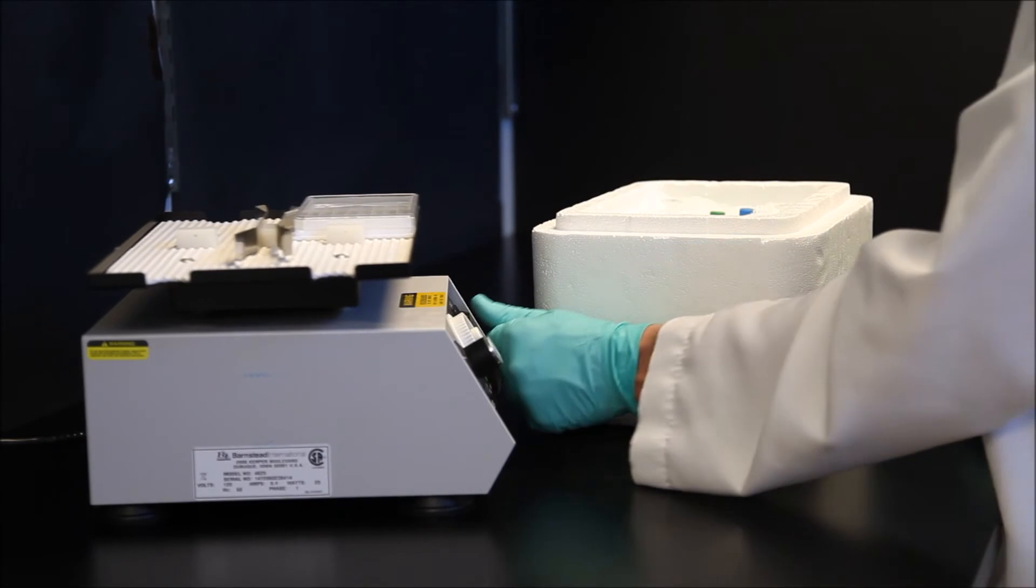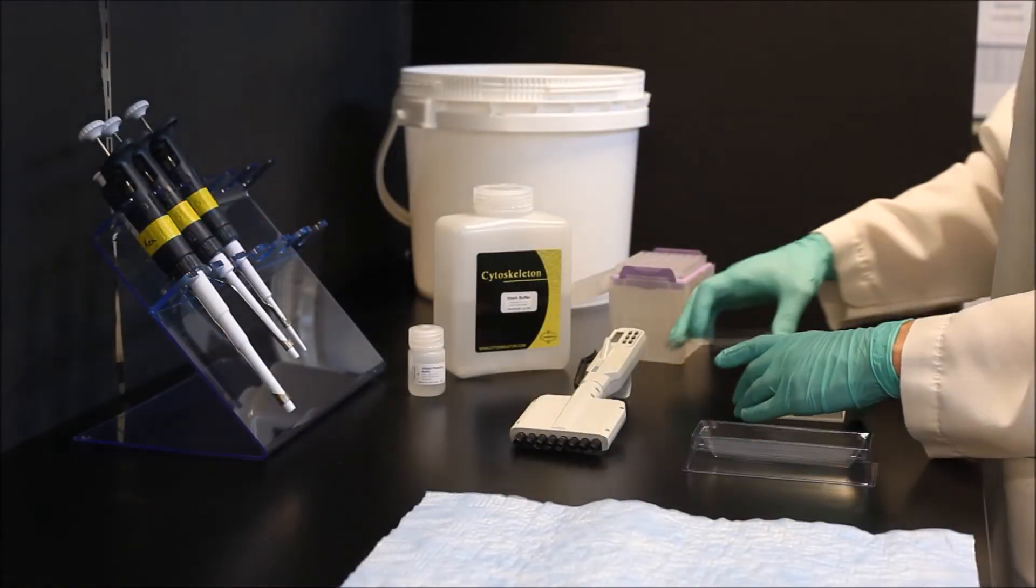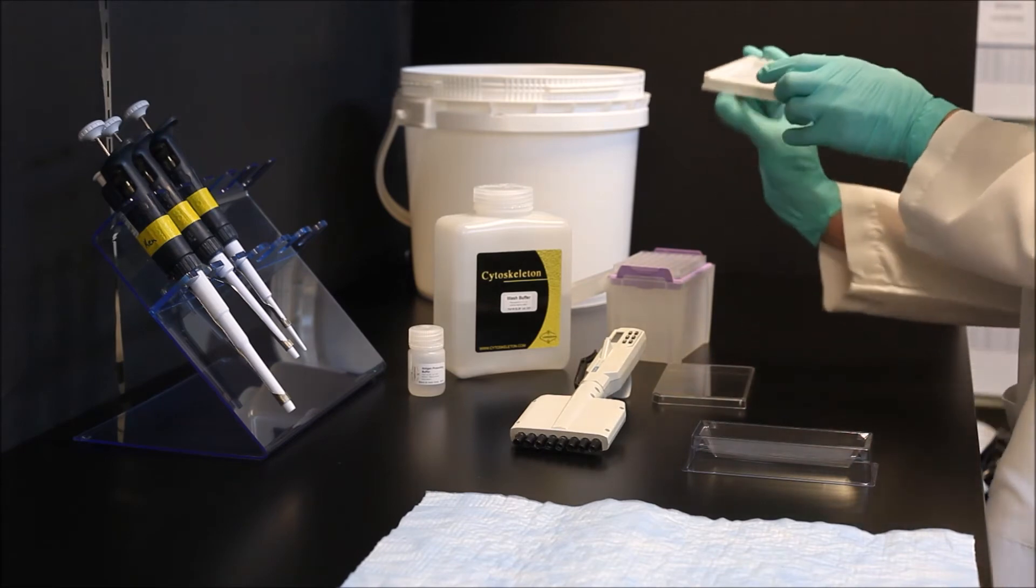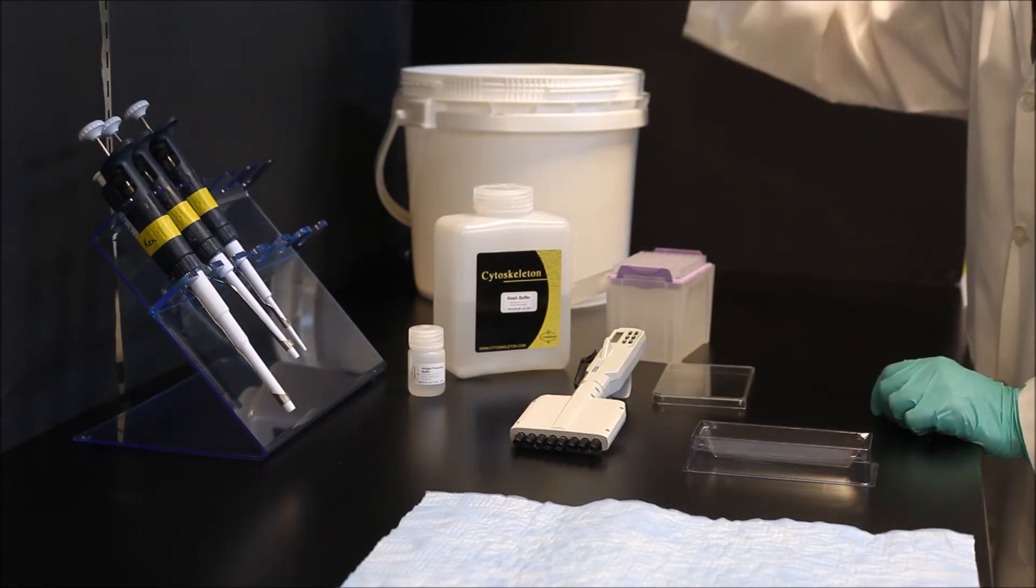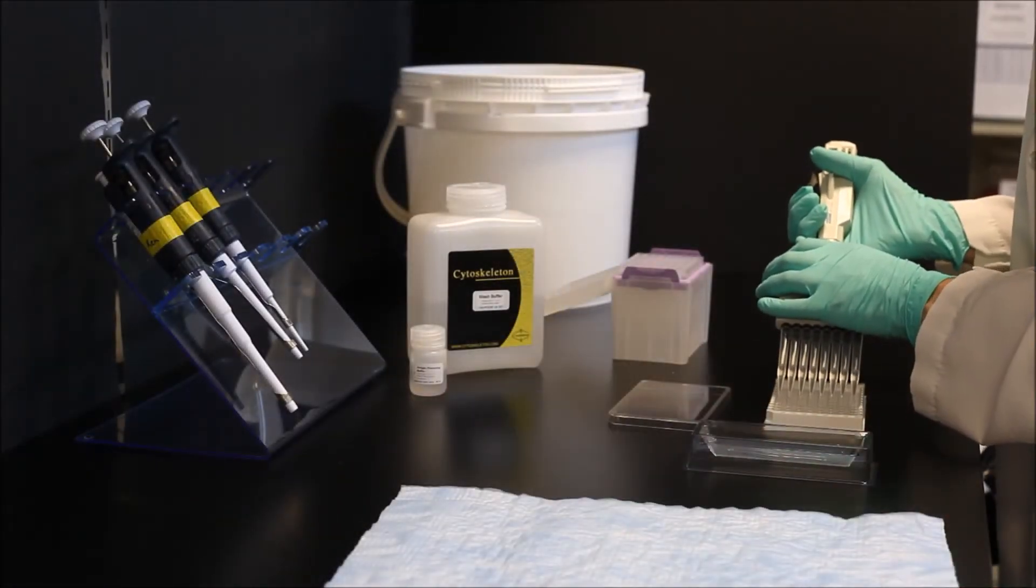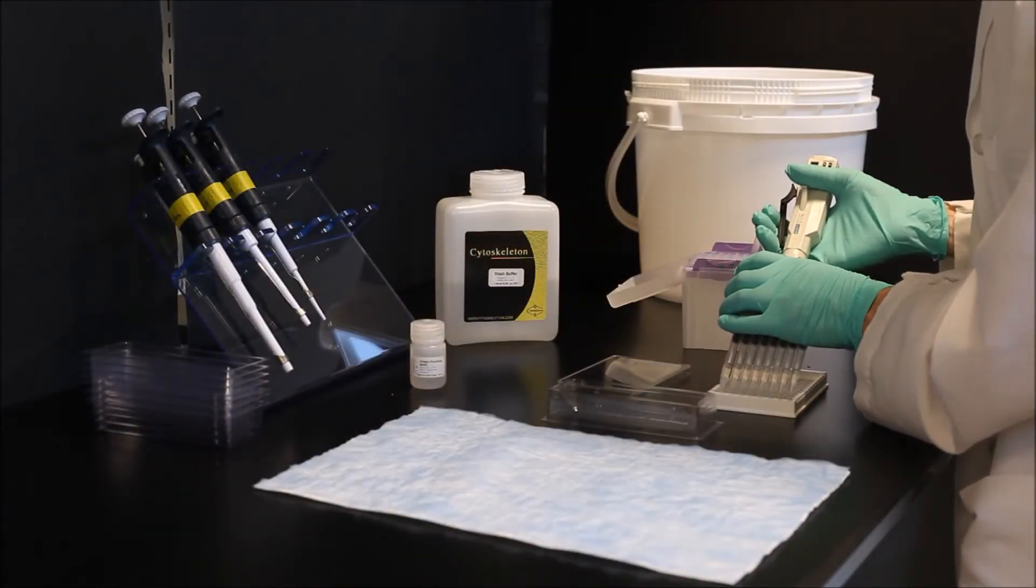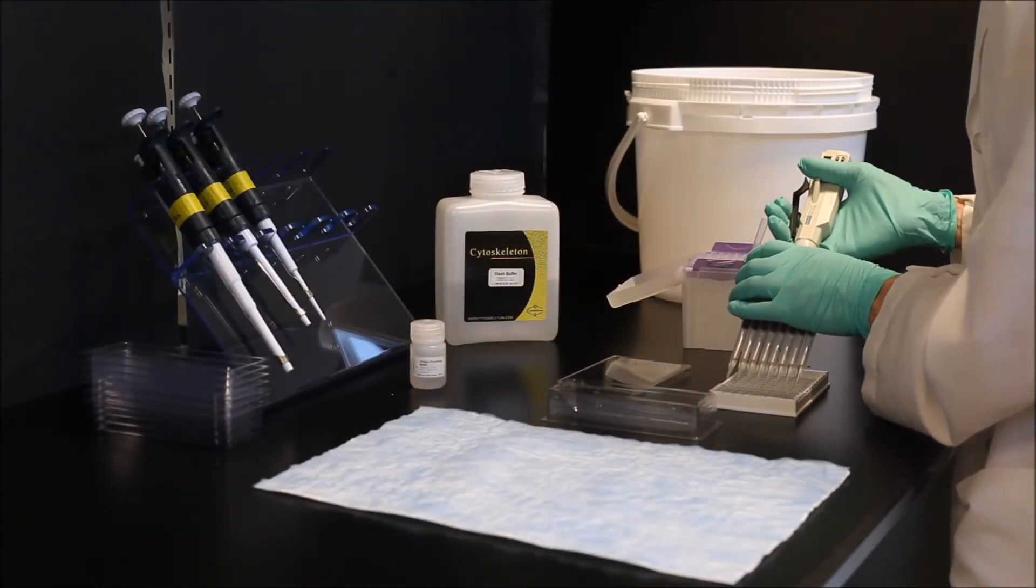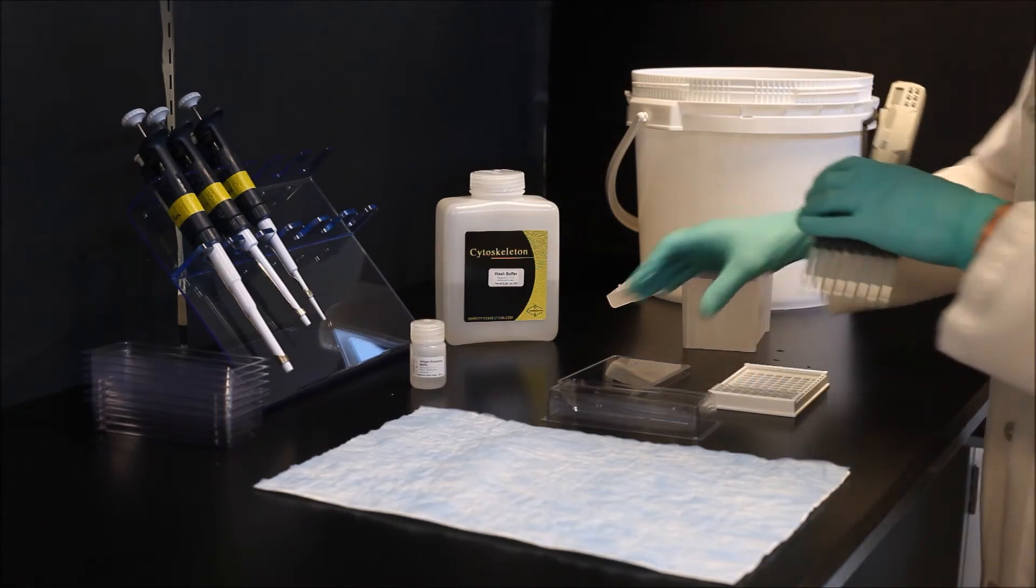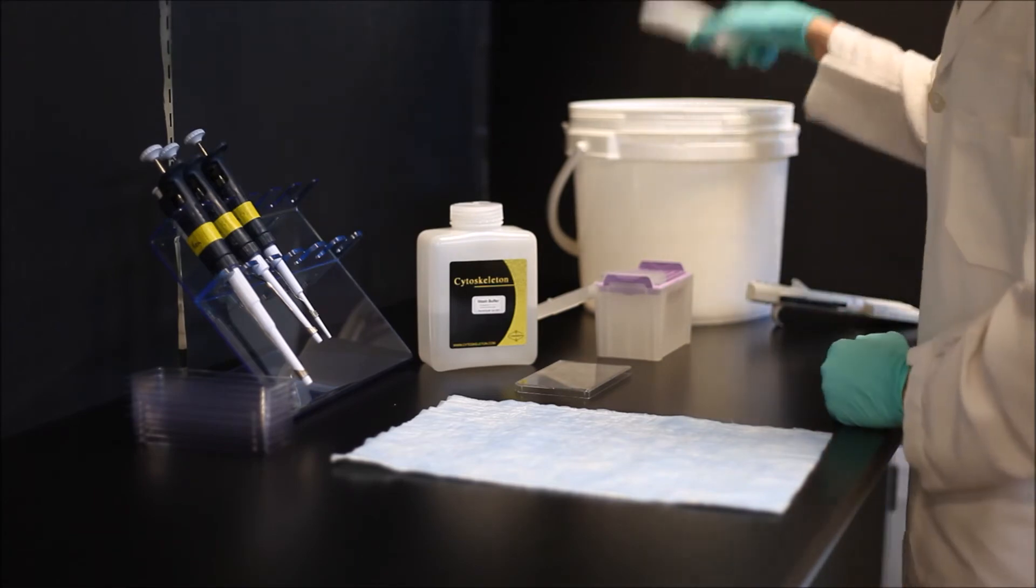After the 30 minute incubation, remove the plate from the shaker and wash the wells twice with room temperature wash buffer. Immediately add the antigen presenting buffer and incubate at room temperature for two minutes. These steps must be performed quickly to retain the most signal. Wash wells three times in room temperature wash buffer.